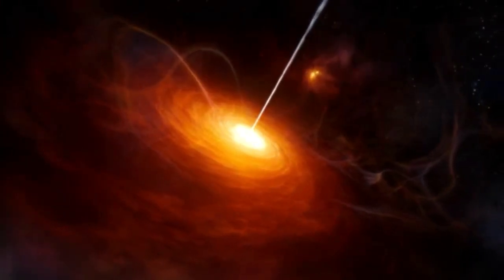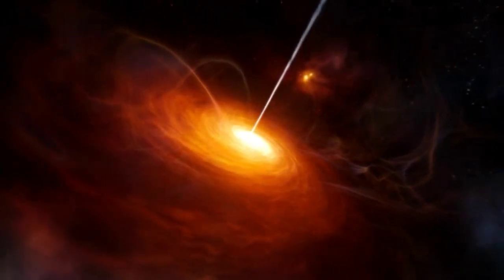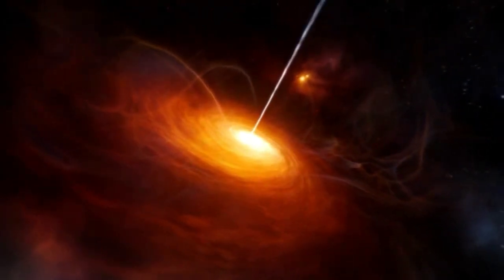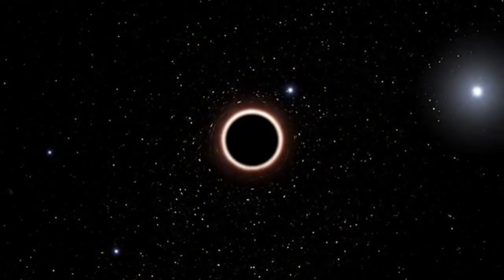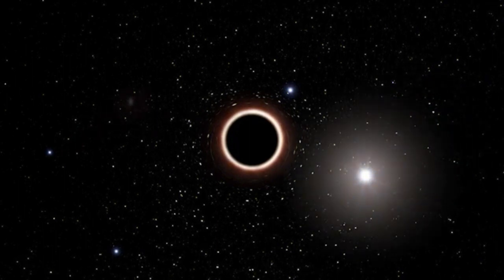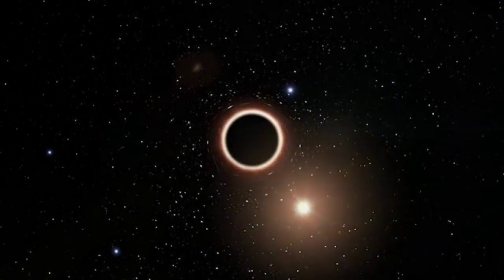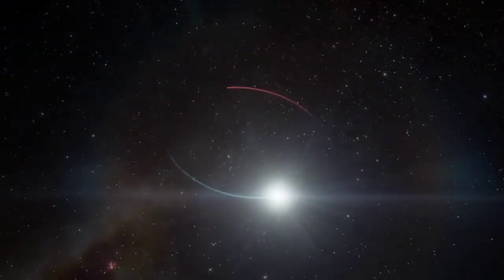Some black holes are enormous. Supermassive black holes have diameters in the region of tens of millions of kilometers. But that's not guaranteed. Some black holes are much smaller. Stellar mass black holes, those with a mass similar to our sun, can be absolutely tiny. In fact, in 2019, astronomers found a black hole thought to be only 19 kilometers across.